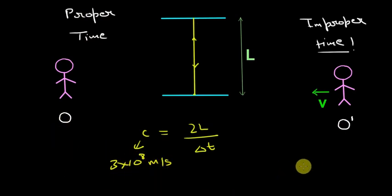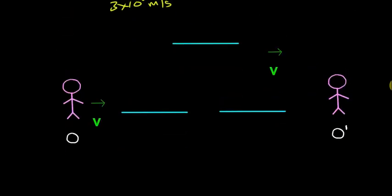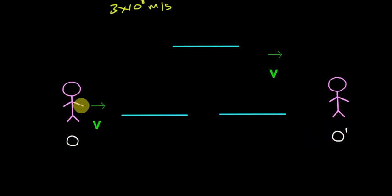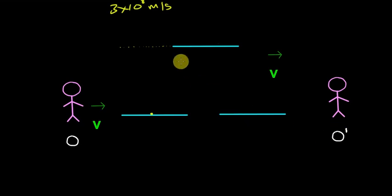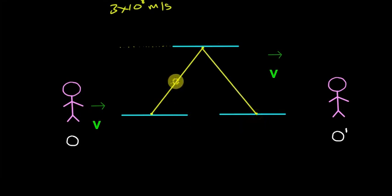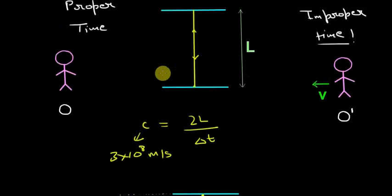Now let's look at these two mirrors from observer O dash. For observer O dash, observer O is moving with speed v, and the mirrors are also moving with speed v in this direction. When the flash of light starts, the upper mirror is also moving forward, so whenever the flash of light hits the upper mirror it will be a little forward in space. The light will travel a diagonal path like this, and intuitively you can see that this path traveled by light is greater than the 2L path.